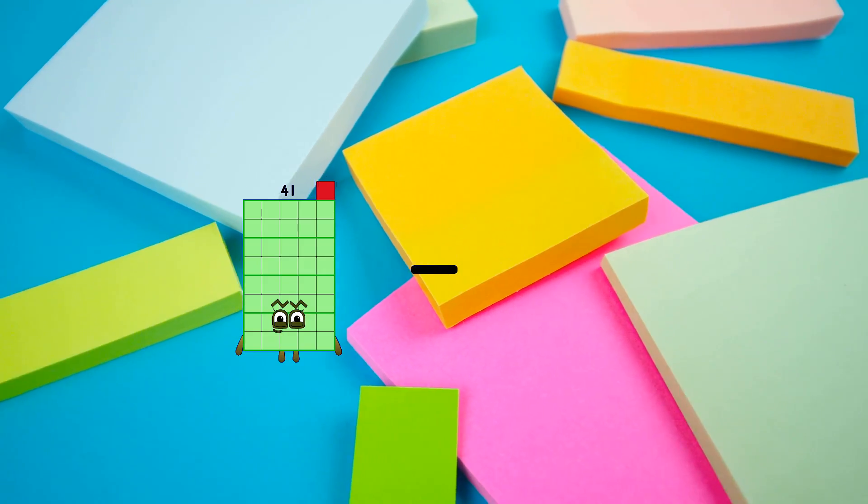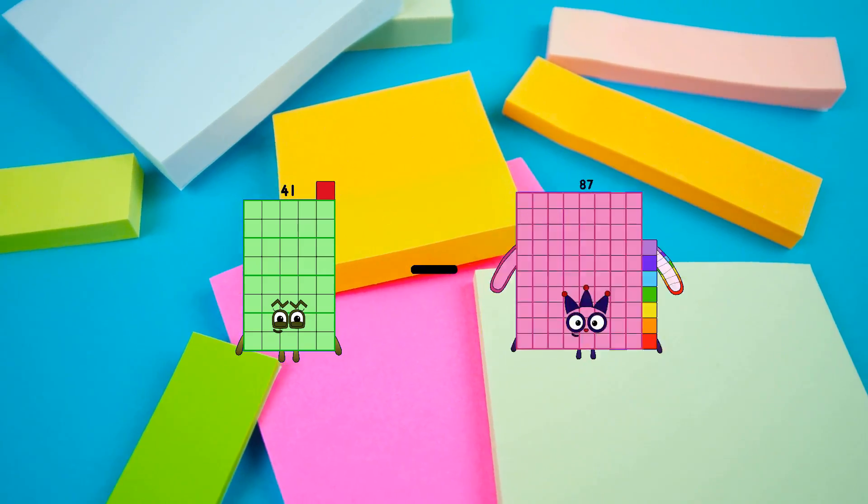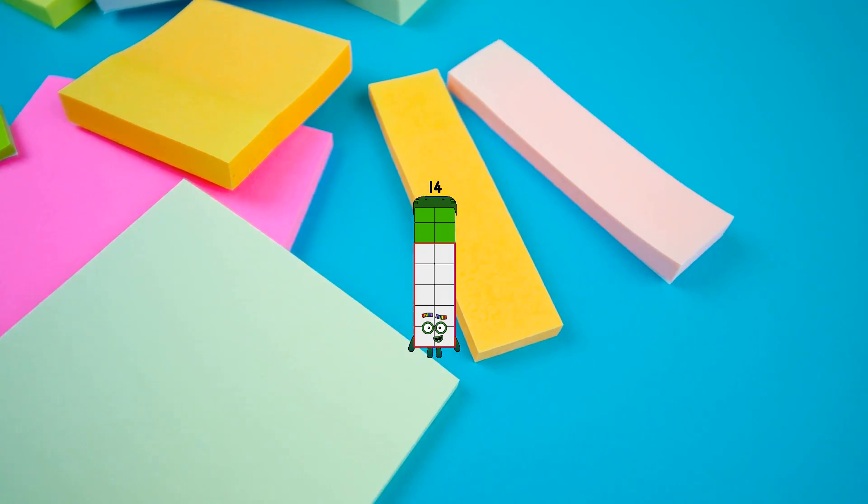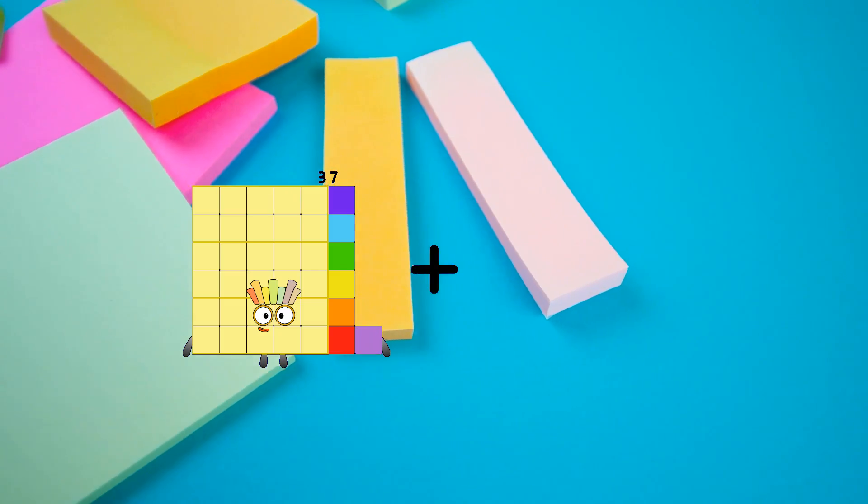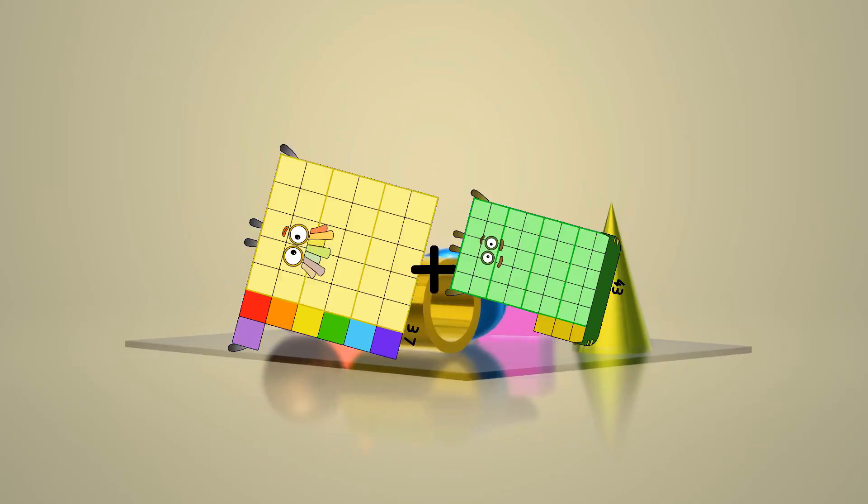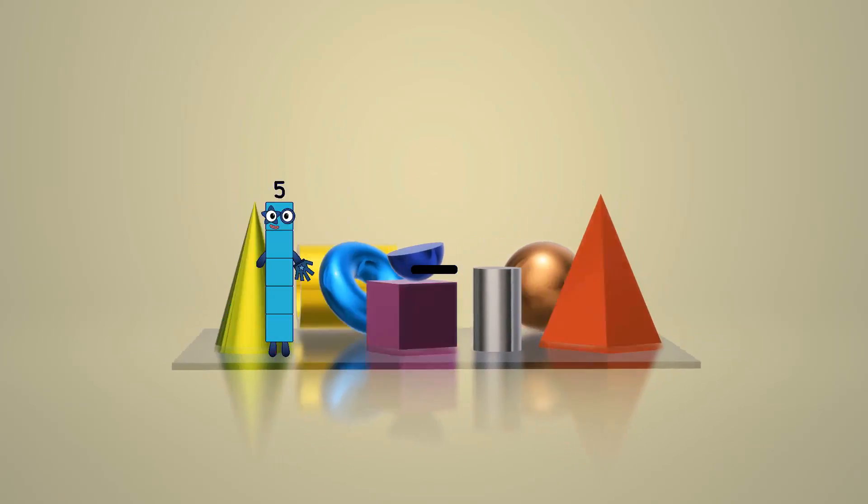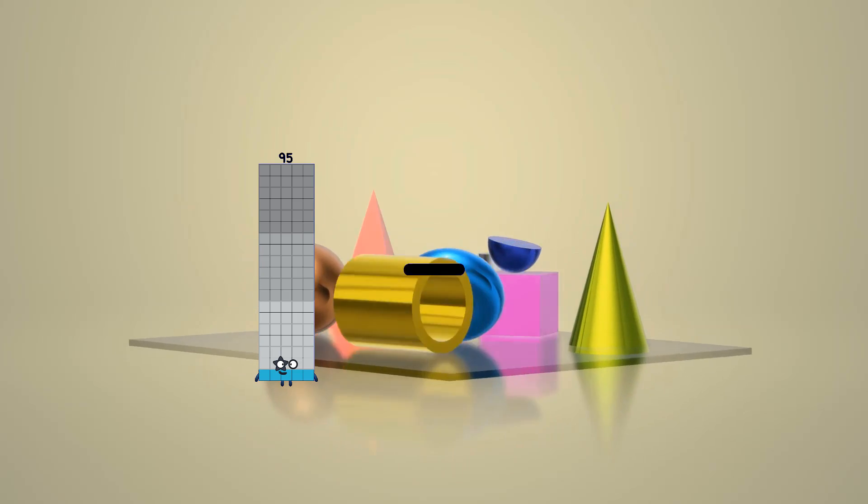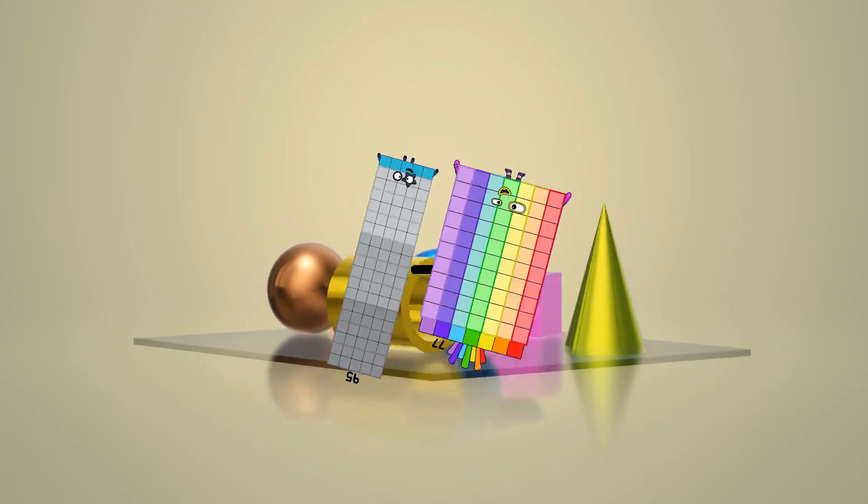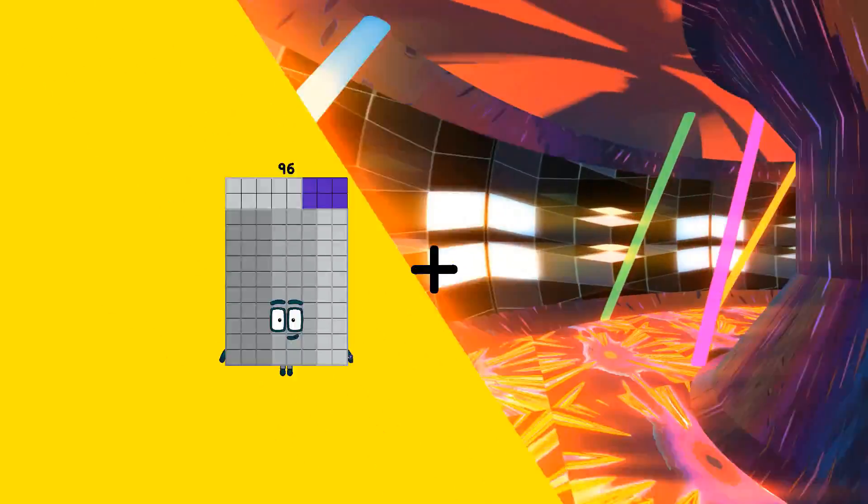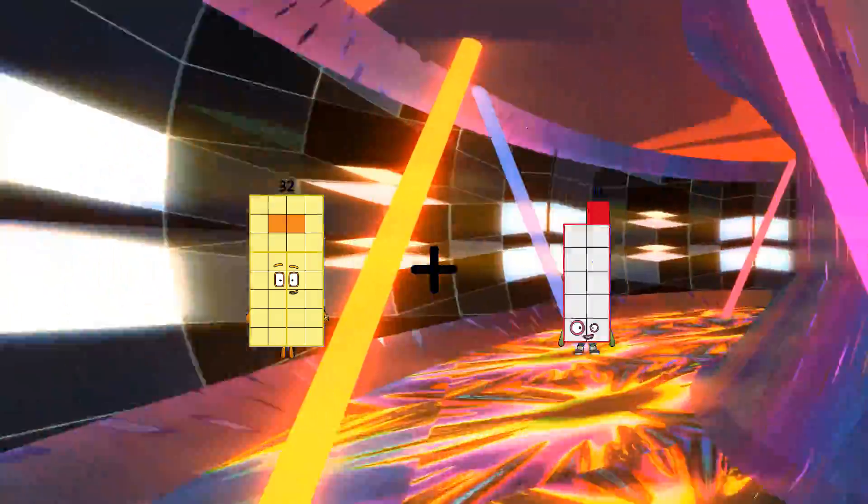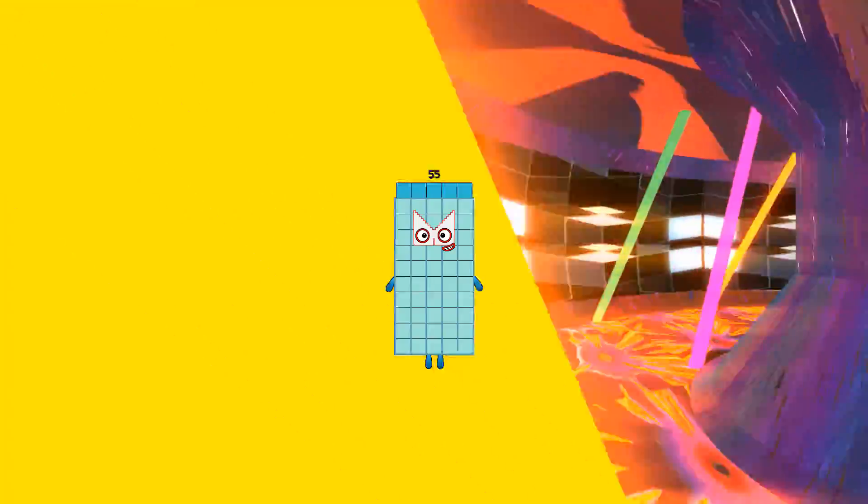41 minus 27 equals 14. 37 plus 43 equals 80. 95 minus 77 equals 18. 32 plus 23 equals 55.